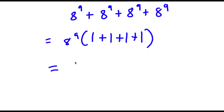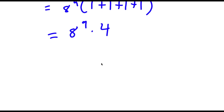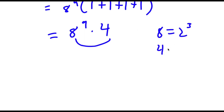Now if I simplify what's in parentheses, I get 8 to the power of 9 times 4, because 1 plus 1 plus 1 plus 1 is 4. Now to solve this, I'm going to make both of these terms into the same base. So 8 is the same thing as 2 to the power of 3, and 4 is the same thing as 2 to the power of 2.